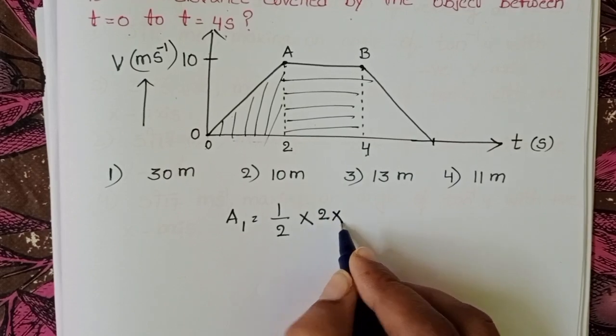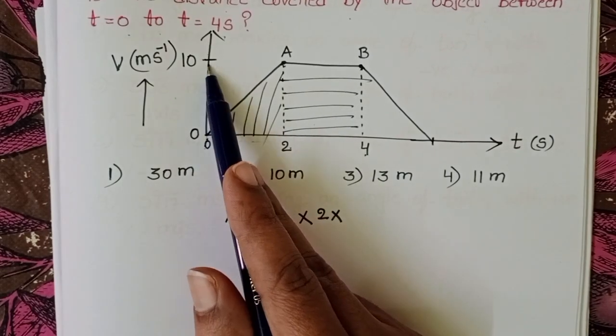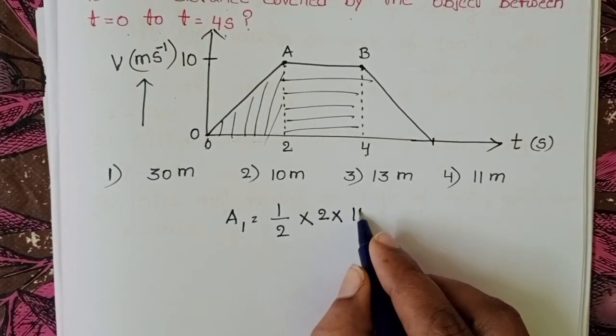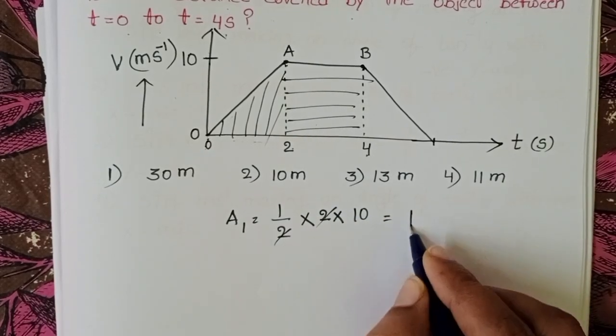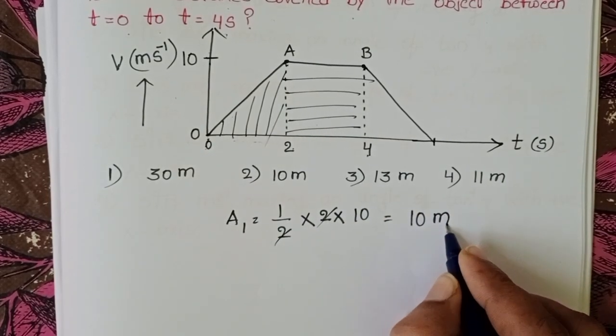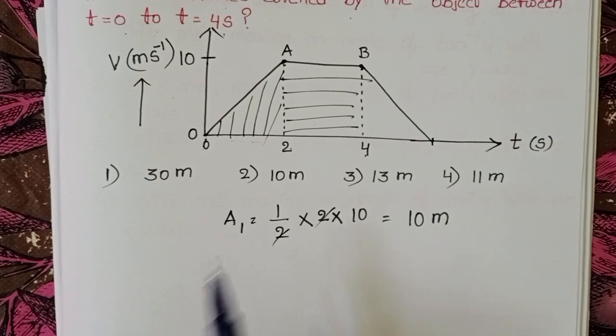Take 2 seconds, and on the y-axis 0 to 10 meters per second. 10. Then 2 gets cancelled - that equals 10 meters. A1 equals 10 meters.